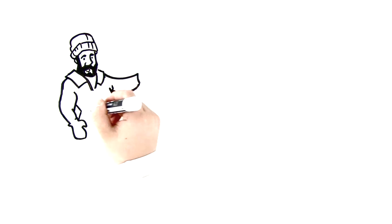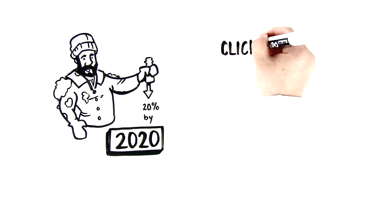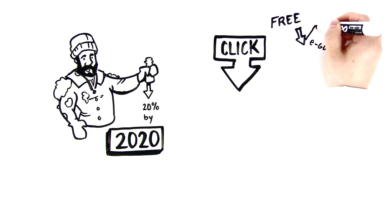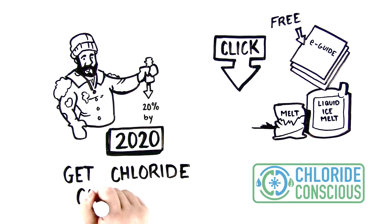Ready to help us reduce chloride emissions by 20% by 2020? Click below now for our free 28-page e-guide explaining how ice melters work and how to use liquid ice melt. And get chloride conscious.